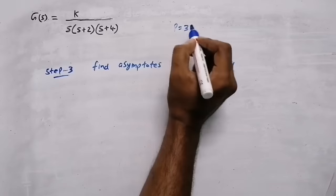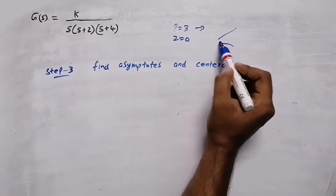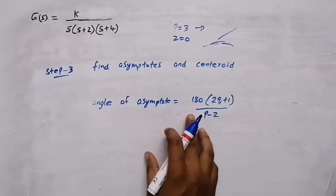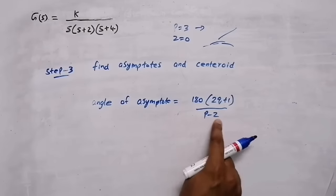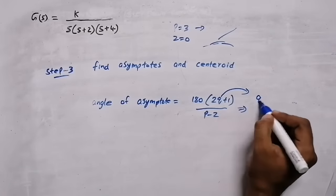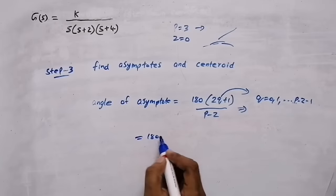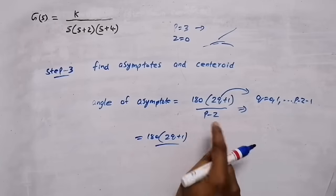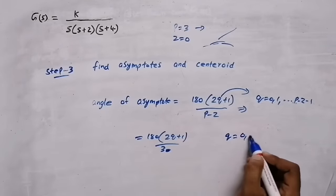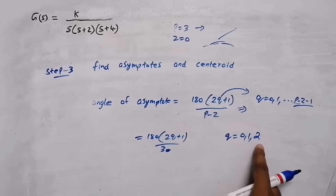Now we need to find asymptotes and the centroid. We have three poles and zero zeros. With three poles there will be three asymptotes — they are just straight lines. The angle of asymptotes formula is: 180°×(2q+1) / (P−Z), where P is the number of poles, Z is the number of zeros, and q = 0, 1, ..., (P−Z−1). Here P=3, Z=0, so P−Z=3, and q takes values 0, 1, and 2.